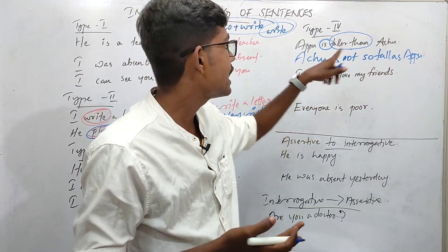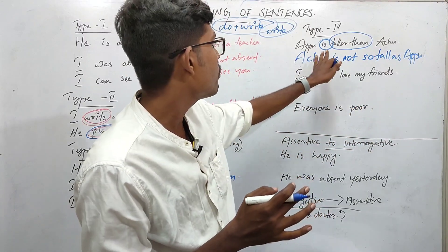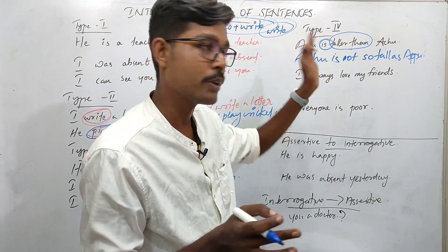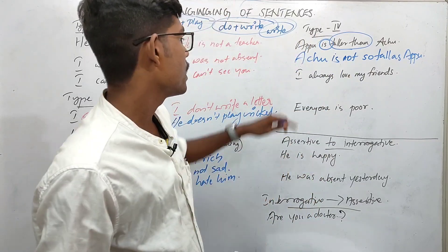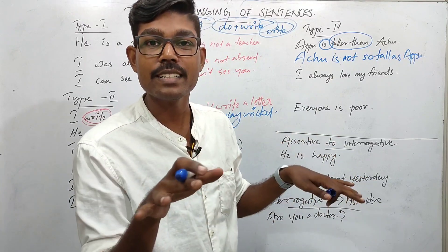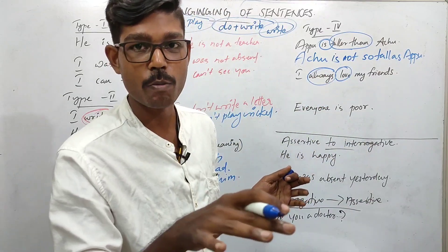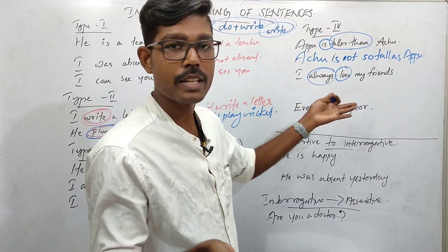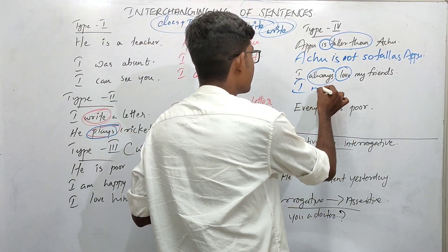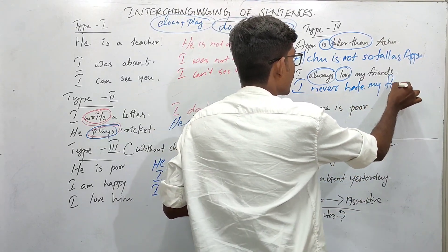Speaking about negative and opposite words: 'Love' is opposite — 'hate.' 'Always' is opposite — 'never.' So: 'I always love my friends' becomes 'I never hate my friends.' Also, 'everyone' — the negative opposite is 'no one.'